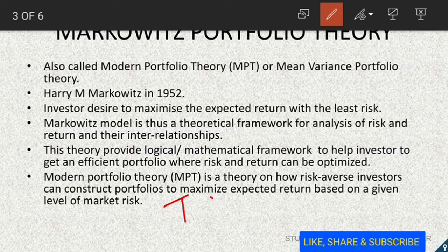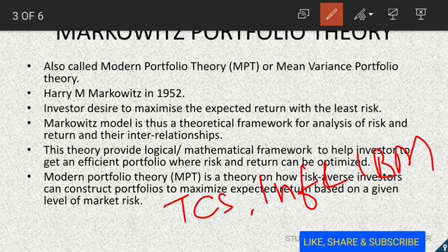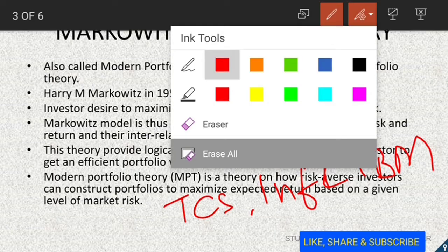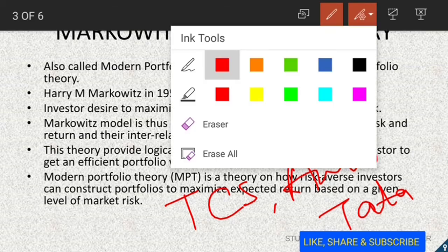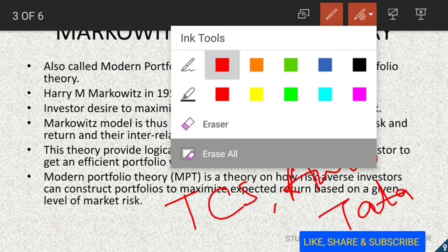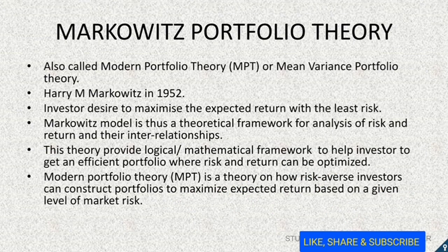For example, a portfolio holding TCS, Infosys, and IBM shares — all of the IT industry — is not a perfectly diversified portfolio, because the correlation between all these stocks is positive since they all belong to the same sector. However, if we make another portfolio with TCS, a pharma company, and Tata Motors, that portfolio is more efficient because these three stocks belong to three different sectors, minimizing risk. You should form a diversified portfolio in which stocks have negative correlations with each other.